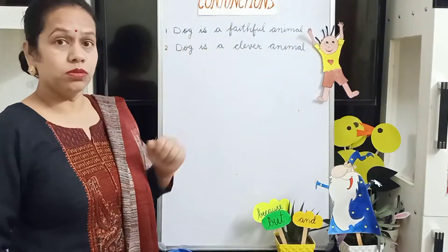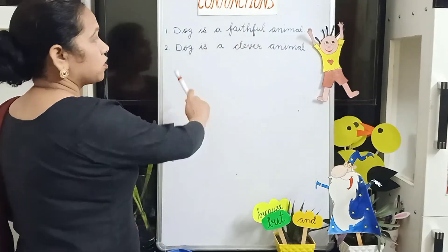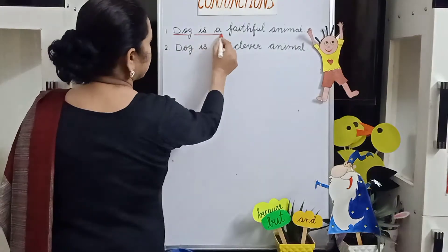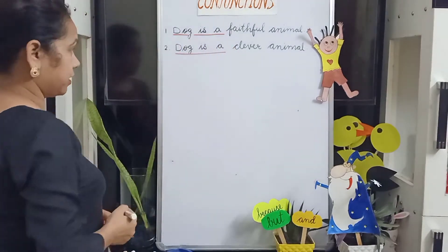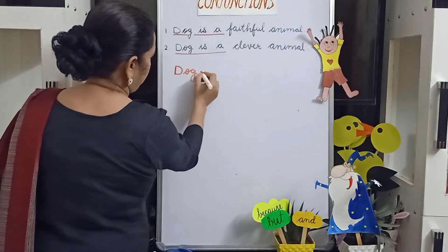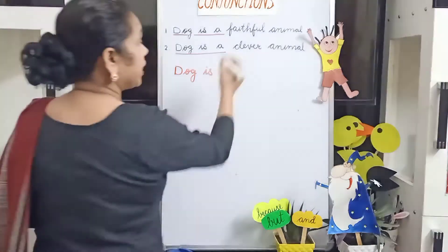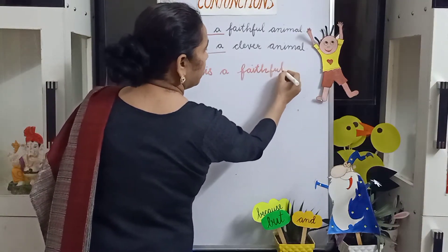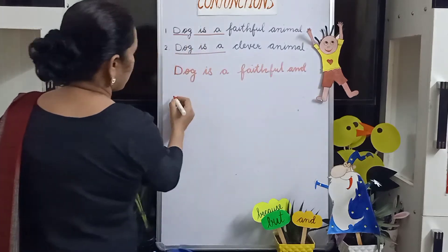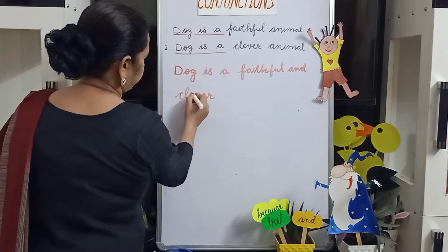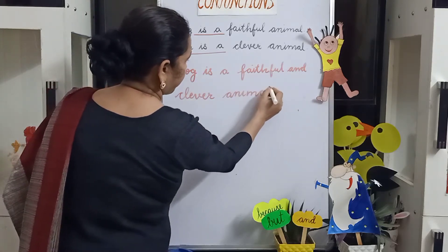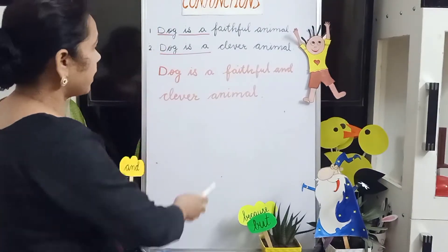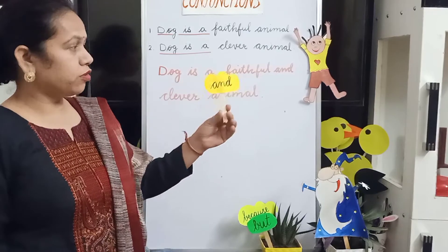Now we have to join these two sentences: 'Dog is a faithful animal' and 'Dog is a clever animal.' We will take out the common part from both sentences — 'Dog is a' — and join them. Dog is a faithful and clever animal. We use conjunction 'and' to join similar ideas.